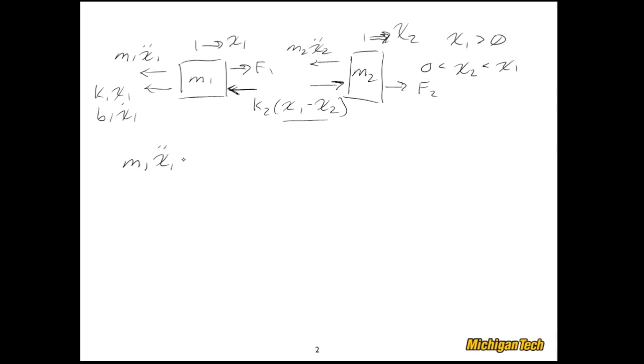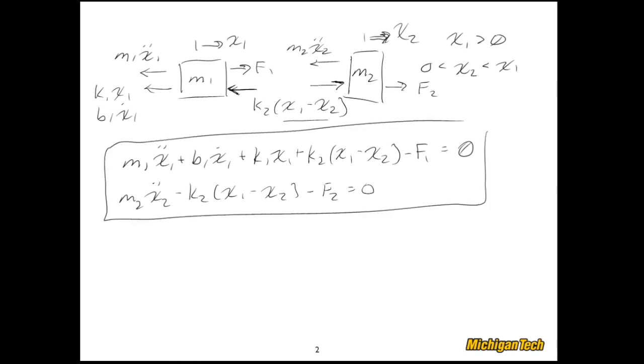So now I can go ahead and write out the equations. M1 X1 double dot plus B1 X1 dot plus K1 X1 plus K2 X1 minus X2 minus F1 equals 0. And for the other mass, I get these two equations, which is exactly the same as what we had on the previous page. The only difference is that the sign is flipped in here and also in front of the K2. So very consistent. Exactly the same equations. Just written in a slightly different form.